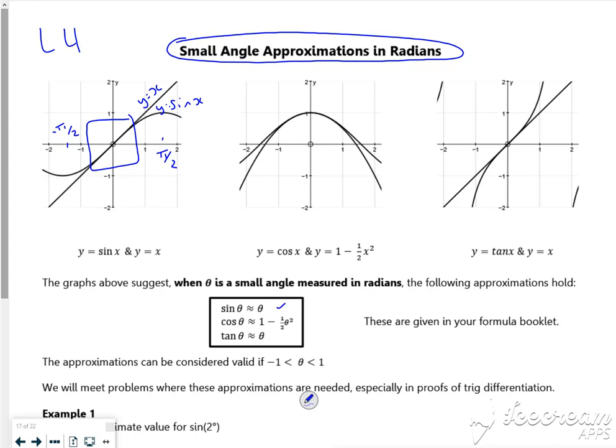Right, so let's do the third one along here which is the tan graph. So I've got tan x and I've got y equals x. And a similar idea, if the angle's small, it looks like the same thing. So tan theta is approximately theta.